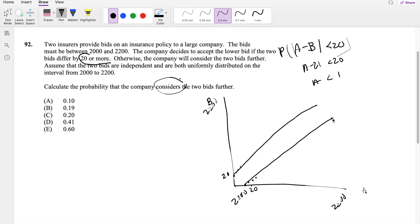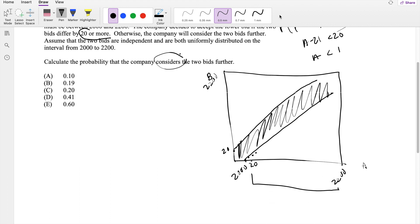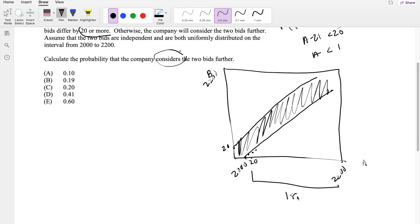And we're looking for a difference that's less than 20, so we're looking for this part right here. But it's actually honestly easier for us to find what the area of these two triangles are. Because we know that if this is 20, then this space right here must be 180. Because this is equal to 2200 minus 2000 minus 20, which is equal to 180. And this height right here, likewise, is going to be 180.